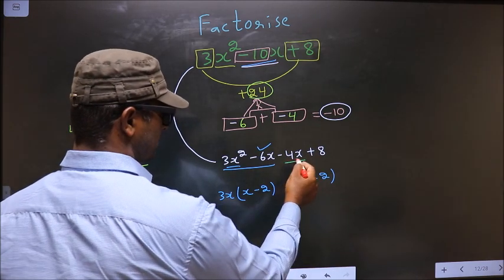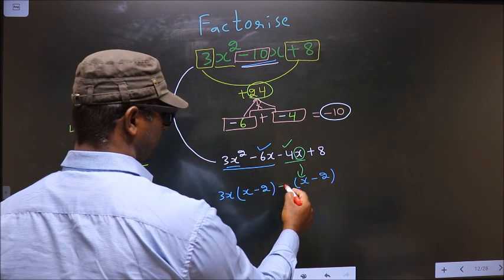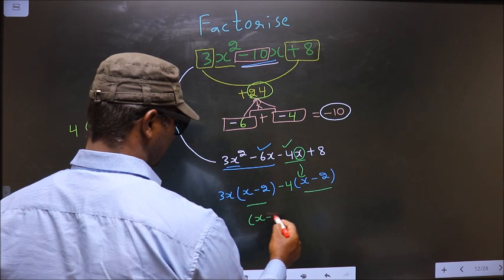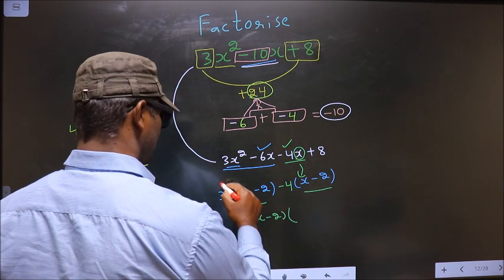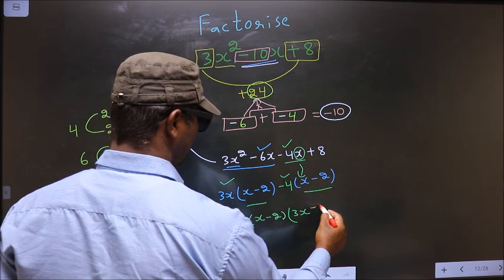Now from this, x has gone inside, so outside you are left with minus 4. Now you take out x minus 2 common. So here you have 3x and here you have minus 4.